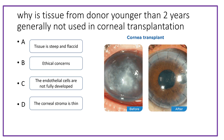Why is tissue from a donor cornea less than 2 years of age usually not used in corneal transplantation? The options are: tissue is steep and flaccid; ethical concerns; endothelial cells are not fully developed; or corneal stroma is thin. The answer is that the tissue is very steep and flaccid and cannot be properly used in keratoplasty surgery.